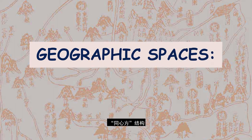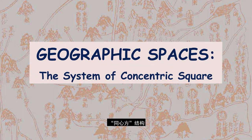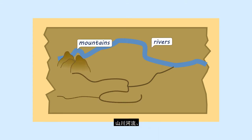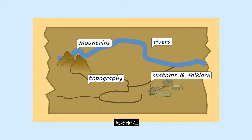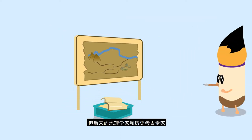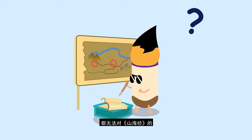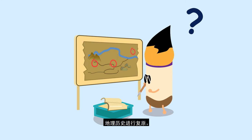Geographic Spaces: The System of Concentric Squares. The Classic of Mountains and Seas is a scientific record of geography, which at first glance vividly documented mountains, rivers, topography, customs, and folklore. But geographers and historical archaeologists of later generations were unable to re-present the geographic history that the book described.